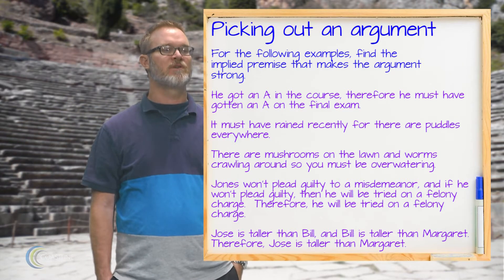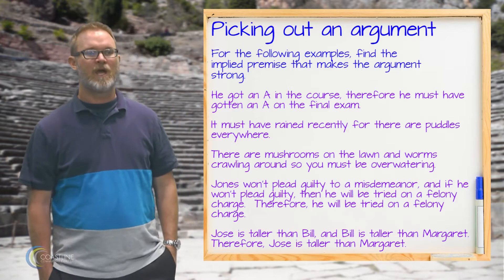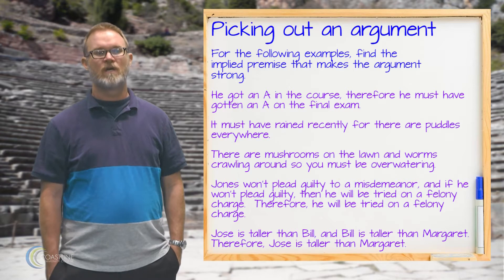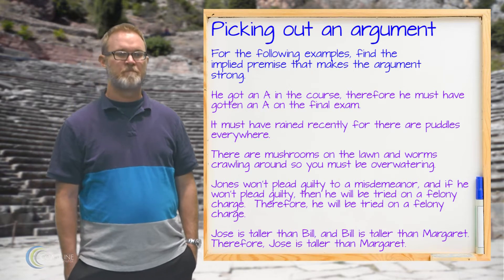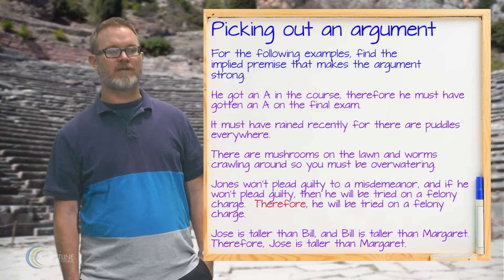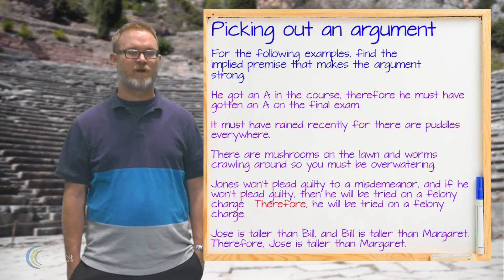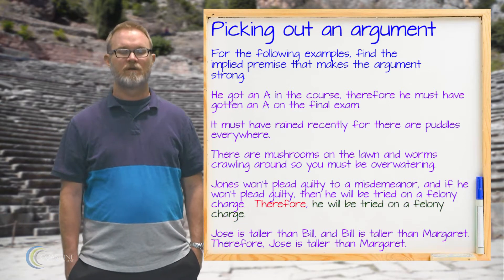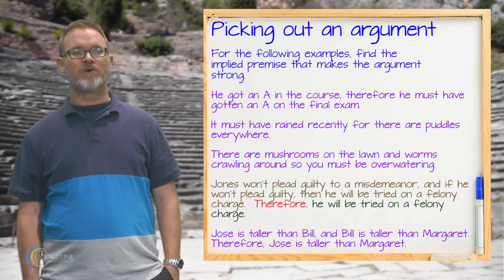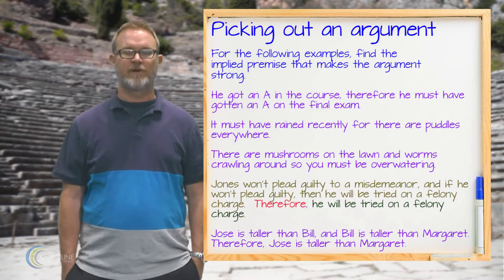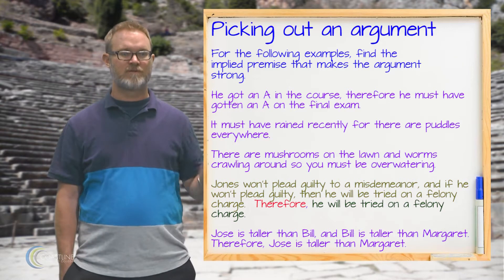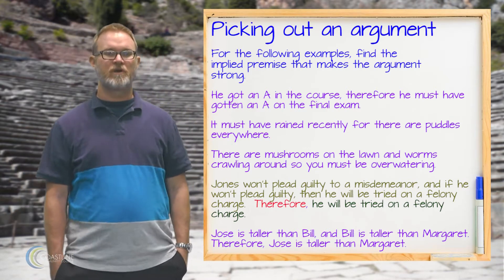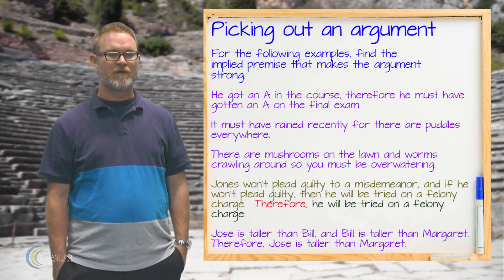Next: Jones won't plead guilty to a misdemeanor, and if he won't plead guilty then he'll be tried on a felony charge. Therefore, he will be tried on a felony charge. The 'therefore' indicator tells us the conclusion is that he'll be tried on a felony charge. We have two premises: Jones won't plead guilty to a misdemeanor, and if he won't plead guilty then he'll be tried on a felony charge.